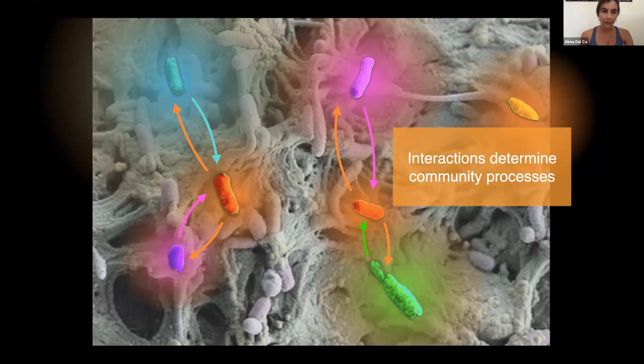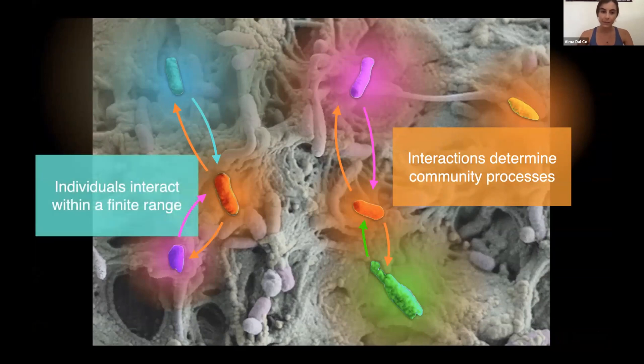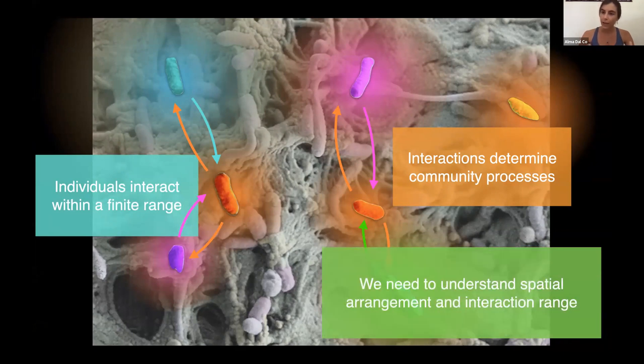Now each individual cell typically interacts within a finite range. Therefore if we want to understand the network of interactions within the community we need to understand the spatial arrangements of the single cells and the interaction range between them.